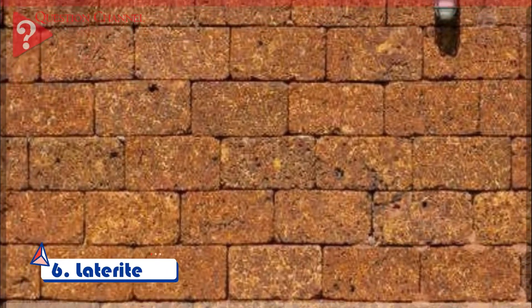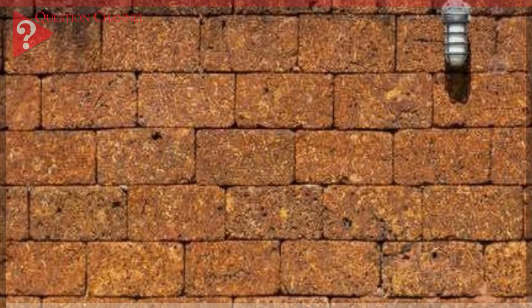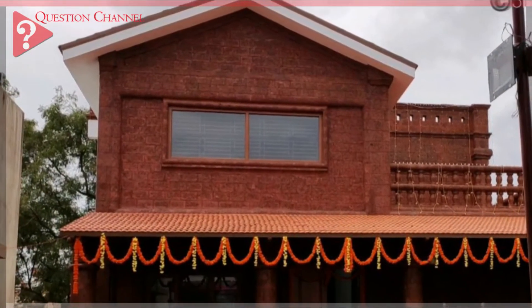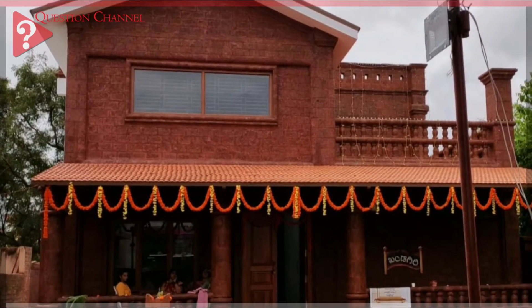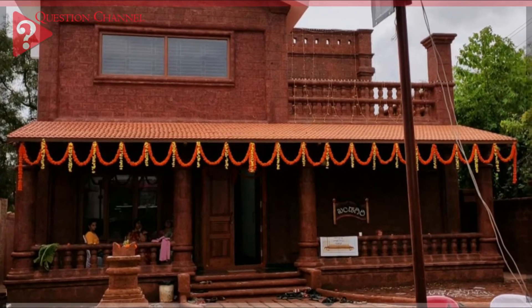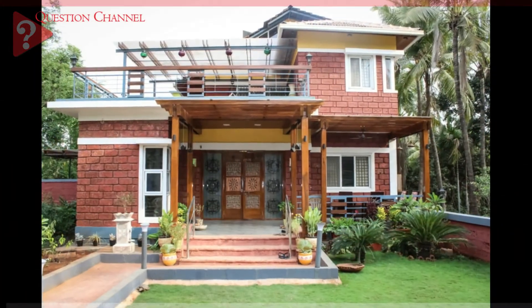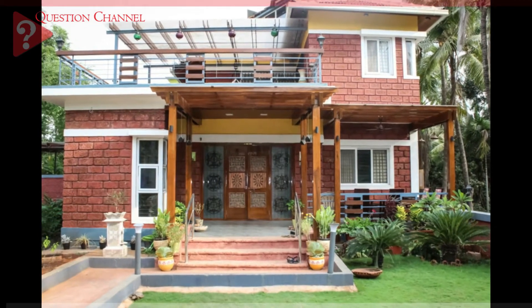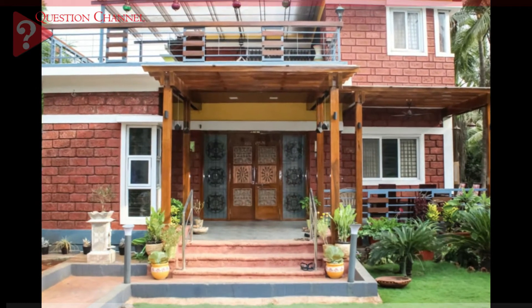Laterite. Laterite is used as building stone, but its outer surface needs to be plastered. It contains a high percentage of iron oxide and can be easily cut into blocks. Laterite occurs in soft and hard varieties, and the compressive strength of laterite is between 1.9 MPa and 2.3 MPa, and its strength is increased with seasoning. Laterite colour may be brownish, red, yellow, brown, and grey.